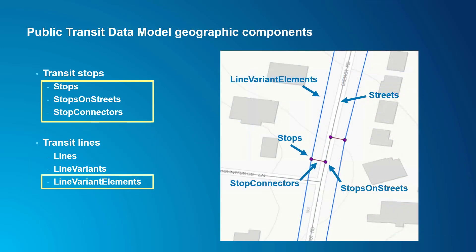Let me review the geographic components again because it can be a little confusing. Streets aren't part of the data model, but if you're going to create a transit-enabled network dataset, you'll need them. You can see the streets in the little map here in gray. Transit lines are the Line Variant Elements feature class — those are the blue lines shown here. Line Variant Elements joins two stops, and the stops are usually offset from the street center line. Stops on Streets is a copy of the stops snapped to the street feature, and Stop Connectors is a little straight line connecting the original stop location with the stops on streets snapped location.